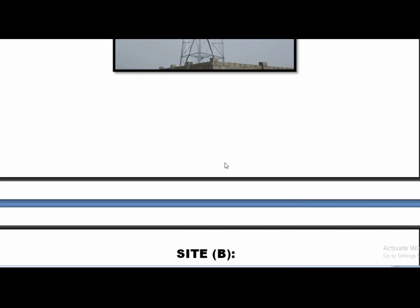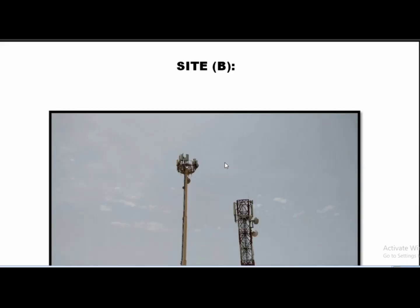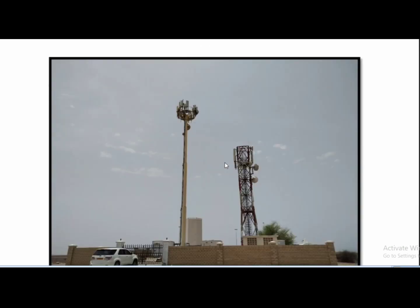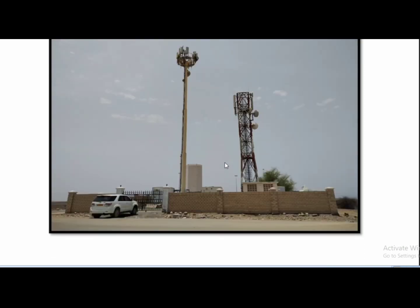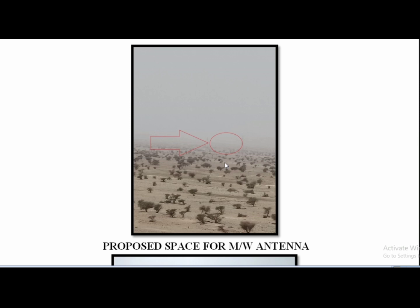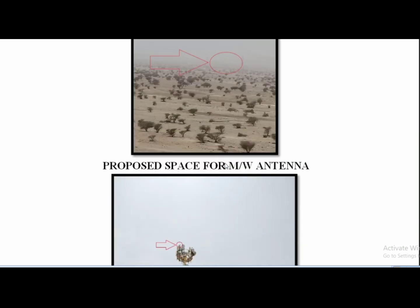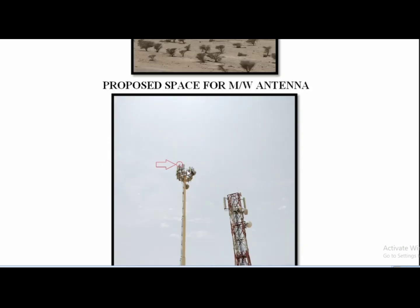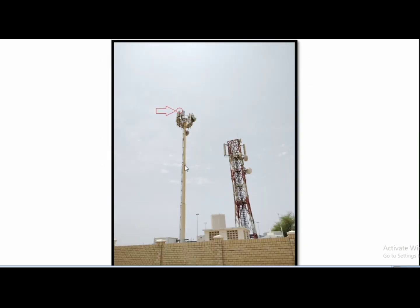Suppose the tower height is 41 meters at site A and 30 meters at site B. Then the microwave must be installed at the same height — for example, 30 meters for site A and 30 meters for site B.